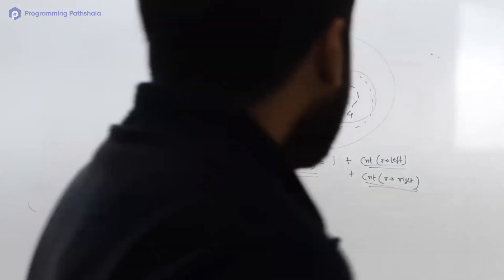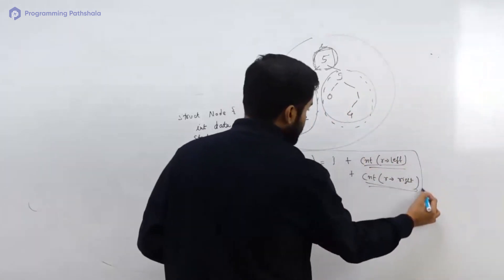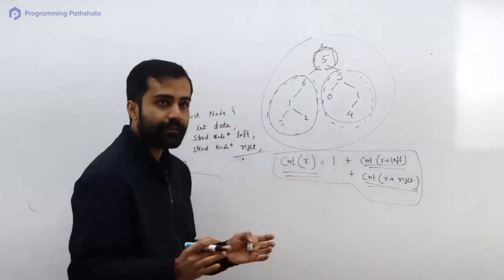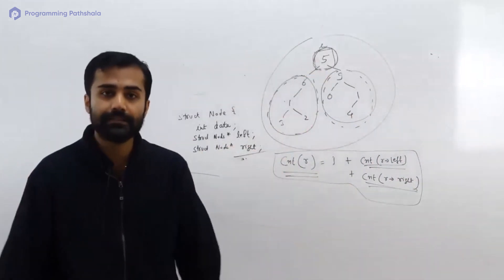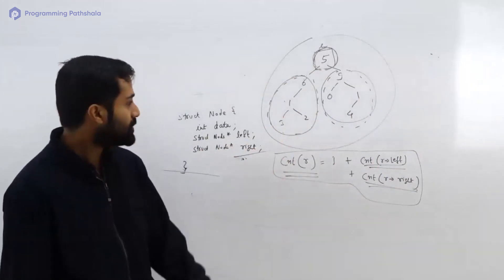Tell me, is this thing correct for all the values of root or all the subtrees? Does it make sense? So let's say you come here, you come here. You are just talking about this much of subtree here.